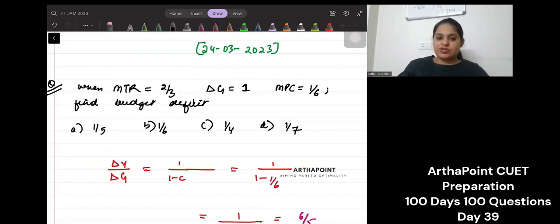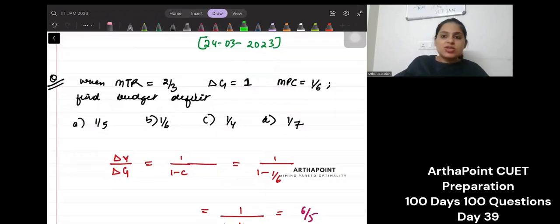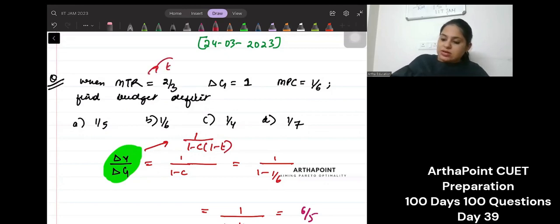It says find budget deficit. Just think about this. See, many students will write the value of multiplier as this. Because tax rate is given to you, right?